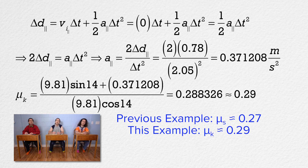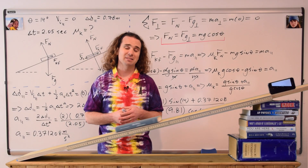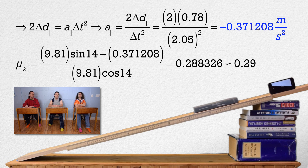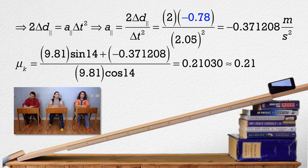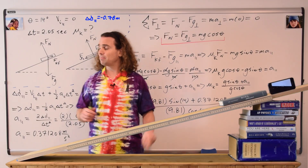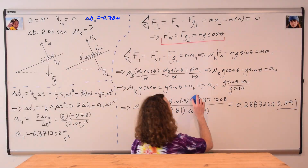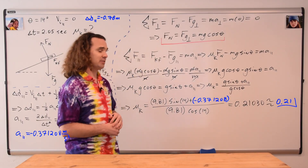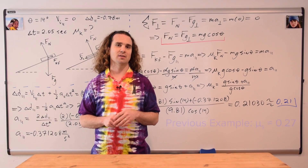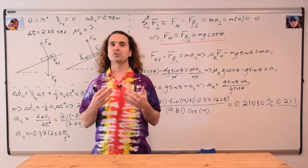Wait — last time didn't we get 0.27 for the coefficient of static friction between that book and that incline? That doesn't make any sense. The coefficient of kinetic friction is supposed to be less than the coefficient of static friction. There is a mistake in this solution. The acceleration should be negative because the book is speeding up in a negative direction — that comes from the fact that the displacement in the parallel direction should be negative 0.78 meters, since the book is moving in a negative direction. Notice when we summed the forces in the parallel direction, the force of gravity parallel was negative because down and to the left was negative. That makes the acceleration negative, which makes the coefficient of kinetic friction 0.21, which is, as it should be, less than the coefficient of static friction of 0.27. You have to be very careful to remember which directions are positive and which are negative.